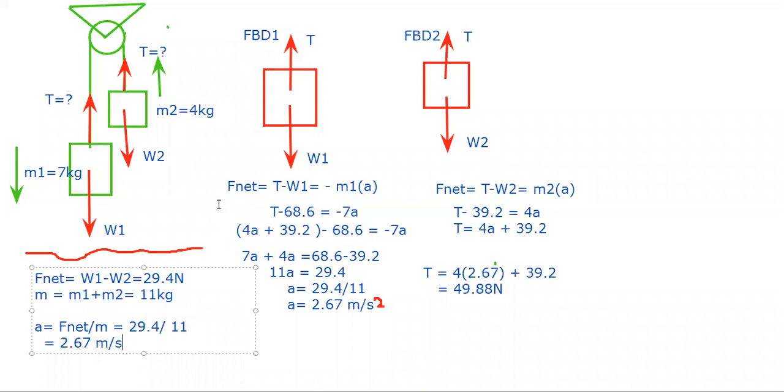Now this one is an easier process to find acceleration, but it is quite impossible to find the tension. So this one allows you to find only one thing. So you can simply directly use Newton's second law by getting the difference of the weight and getting the total mass. Dividing the two allows you to find the acceleration value.